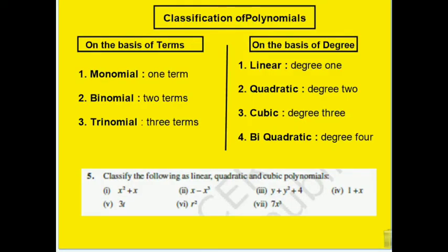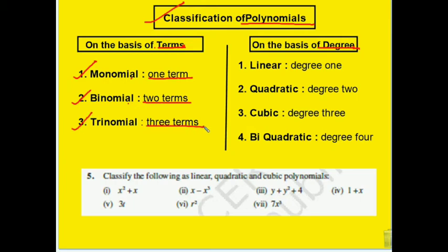Now we have seen all types of polynomials. So, classification of polynomials can be done in two ways: on the basis of terms and on the basis of degree. Terms are like rooms in the polynomial, and degree is the highest power. Polynomials with one term are called monomials; those with two terms are binomials; those with three terms are trinomials.